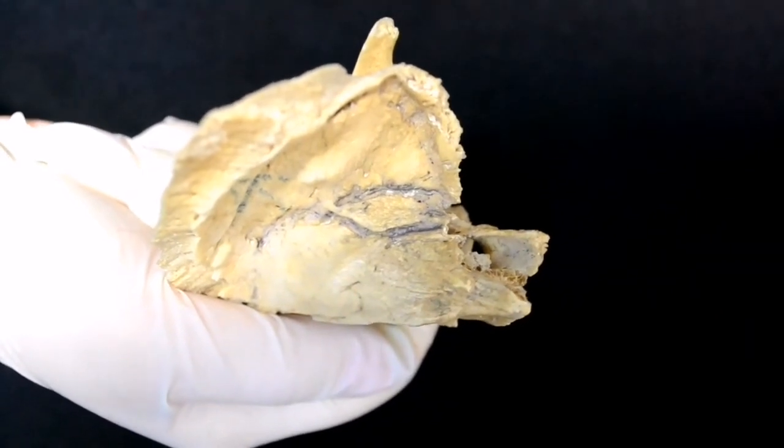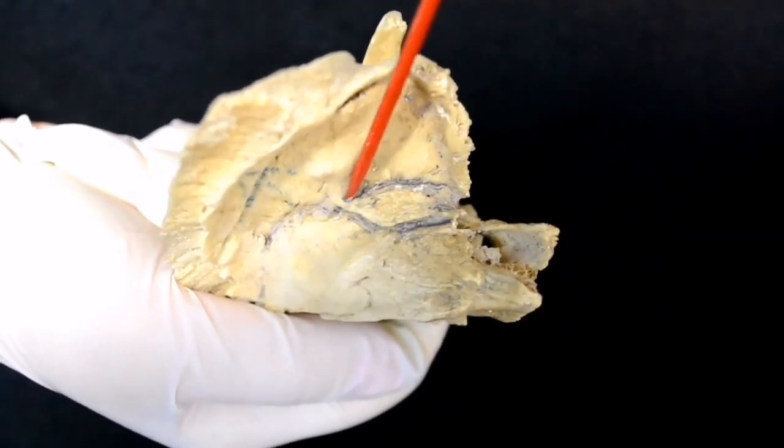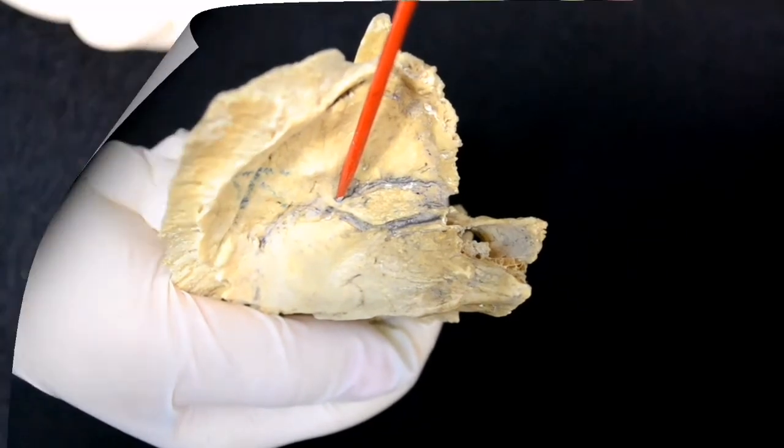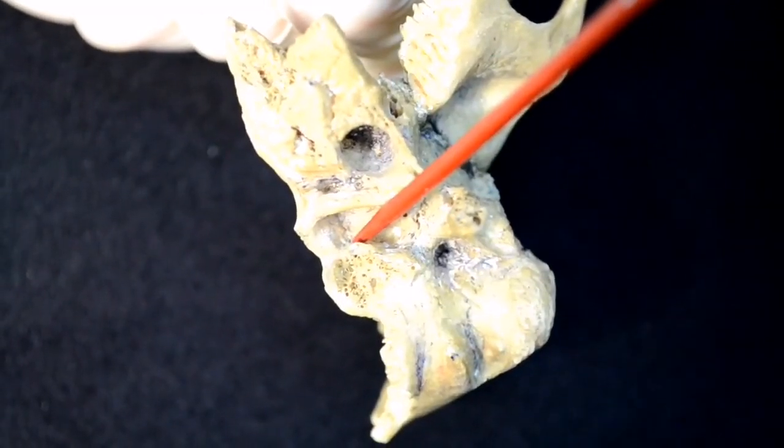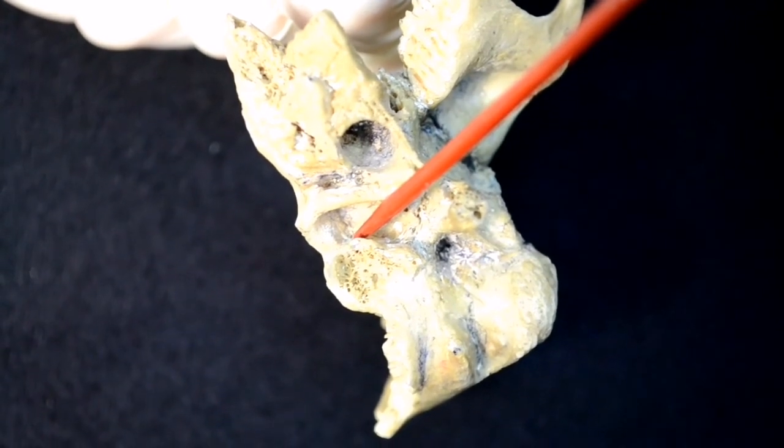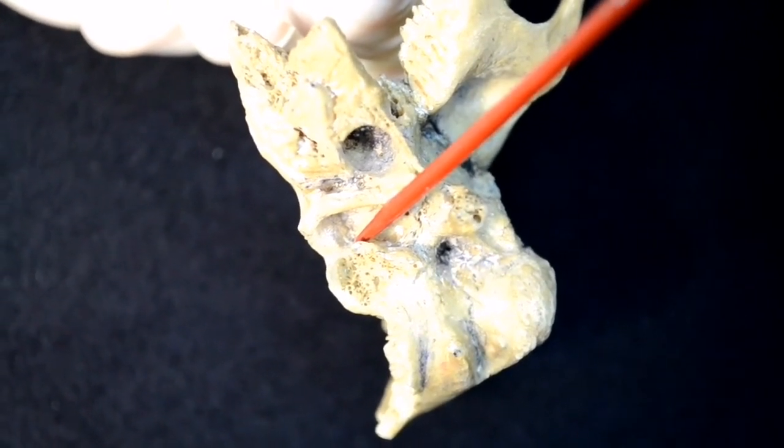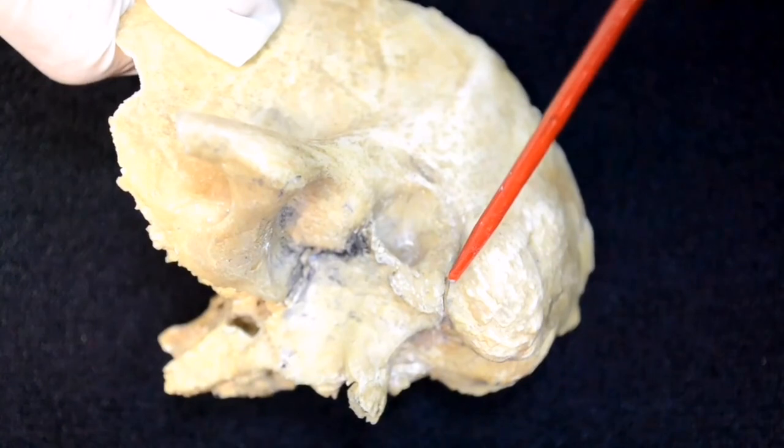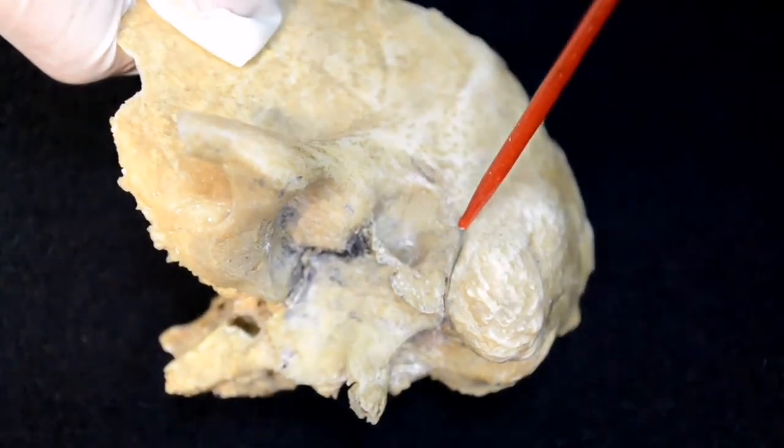It leaves the tympanic cavity through the hiatus canalis nervi petrosi minoris. Canaliculus mastoideus originates at the depth of the jugular fossa and terminates in fissura tympanomastoidea.